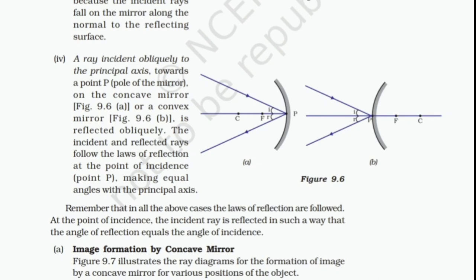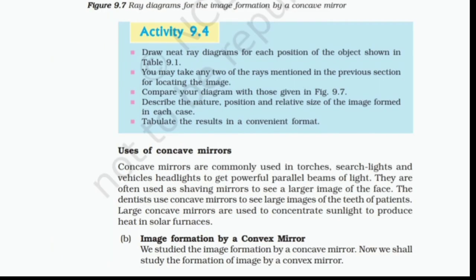Image formation by concave mirror: Figure 9.7 illustrates the ray diagrams for the formation of image by a concave mirror for various positions of the object. Activity 9.4: Draw neat ray diagrams for each position of the object shown in Table 9.1. You may take any two of the rays mentioned to locate the image. Compare your diagrams with those given in figure 9.7. Describe the nature, position, and relative size of the image formed in each case. Tabulate the results in a convenient format.